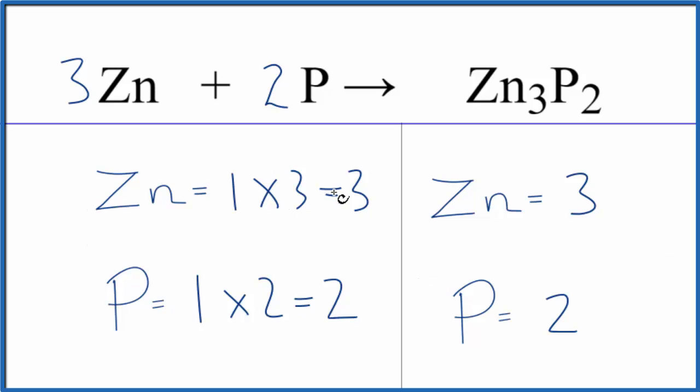If we look at the reactants, we have three zinc atoms and the products, three zinc atoms. If we look at the phosphorus, we have two phosphorus on the reactants side, and two phosphorus on the product side. So it's a balanced equation.